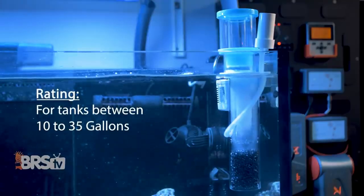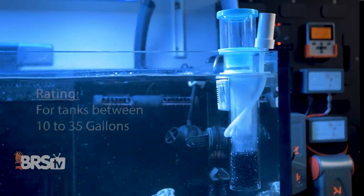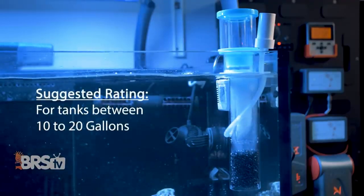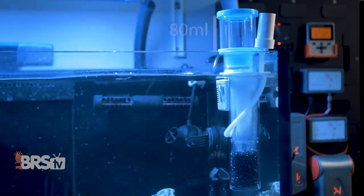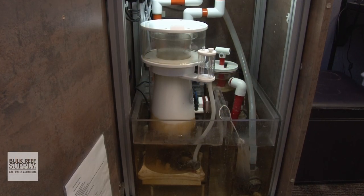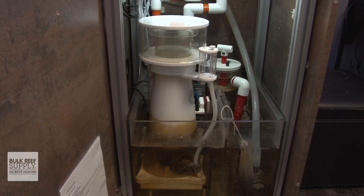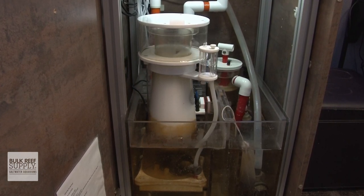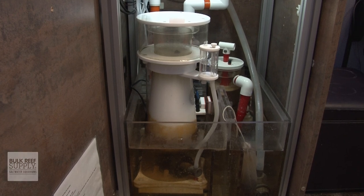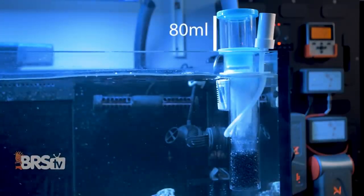eShop's rates it for aquariums as small as 10 gallons up to as large as 35 gallons. With that said, I'd personally use it on reef tanks up to around 25 gallons or less. Once you get into that 30 to 40 gallon range, you usually have more space for a larger skimmer, but if you don't, this can certainly do the trick. You may just end up dumping out that 80 milliliter collection cup a bit more often.